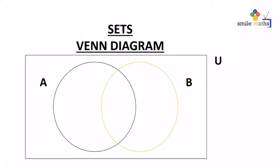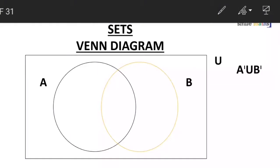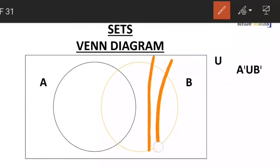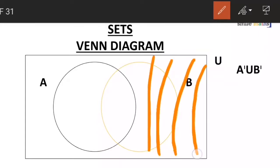Now this time, let's have a complicated one where we have A complement union B complement. So using our pencil, we know that A complement is outside set A. We are going to have places like this — all these parts are A complement.